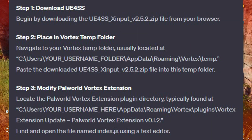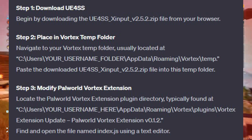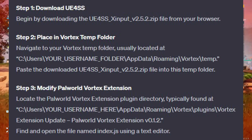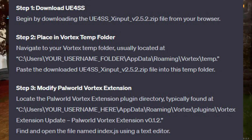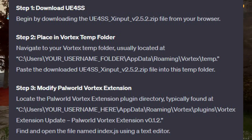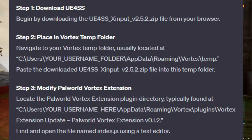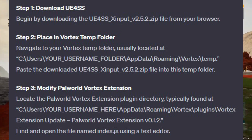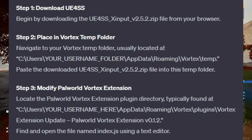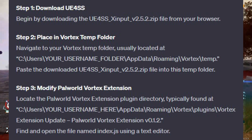Begin by downloading the UE4SS_Xinput_V2.5.2 zip file from your browser. Navigate to your Vortex Temp folder, usually located at C:\Users\[username]\AppData\Roaming\Vortex\temp. Paste the downloaded UE4SS_Xinput_V2.5.2 zip file into this temp folder.